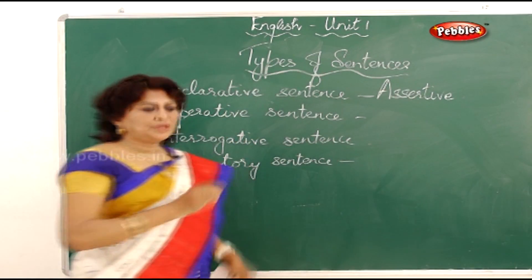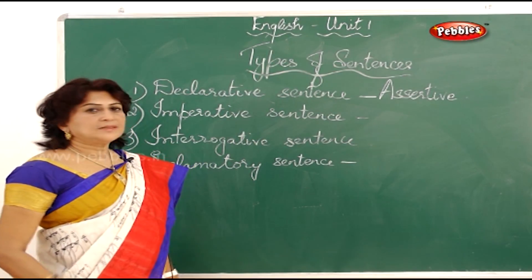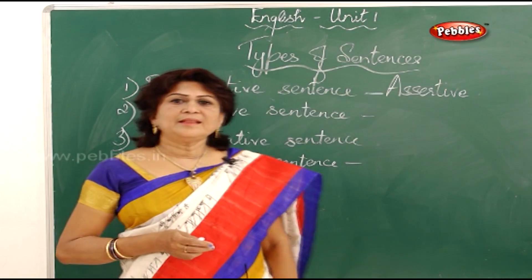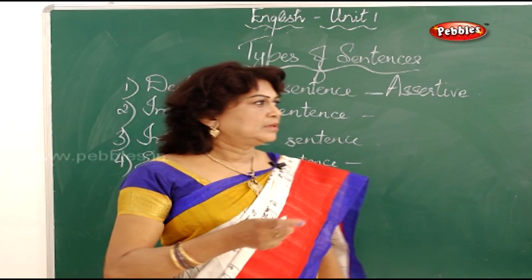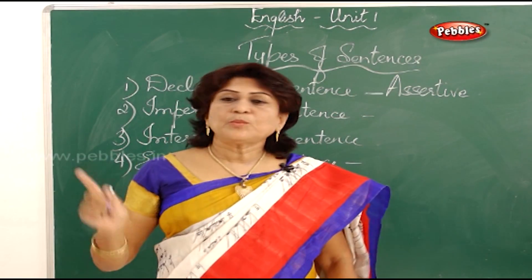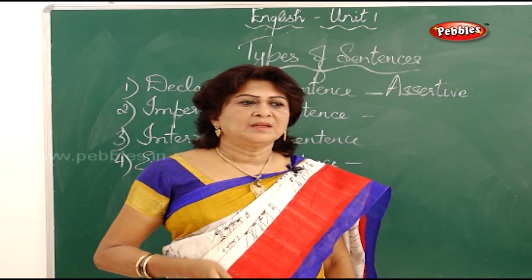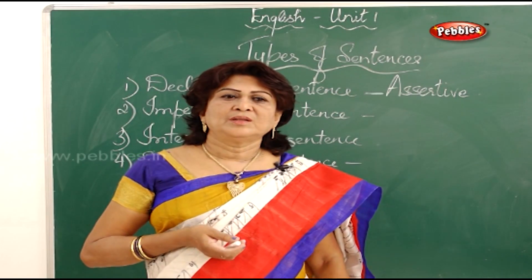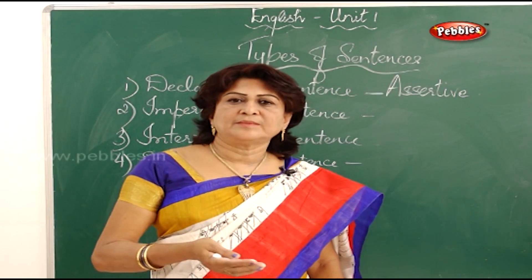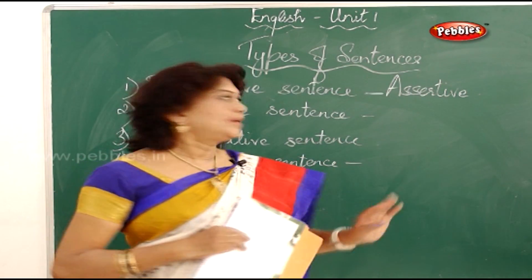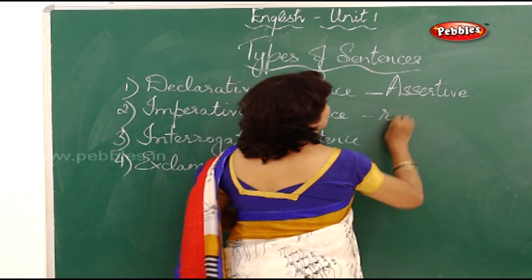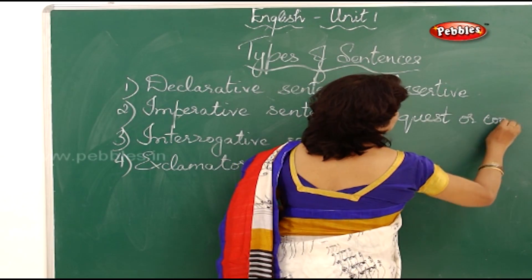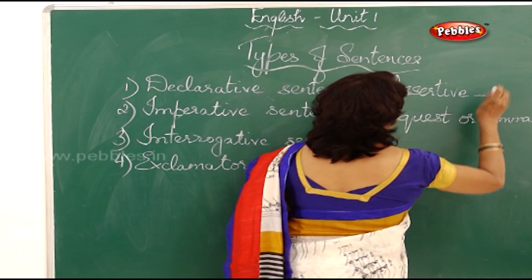In your textbook they have given only assertive sentences, so we will just write assertive. An imperative sentence either gives a command, like 'shut the door' or 'keep quiet,' or it makes a request, like 'will you please keep quiet.' When you say please, that is a request, and that also is an imperative sentence.